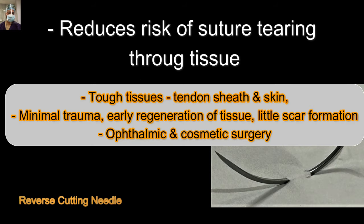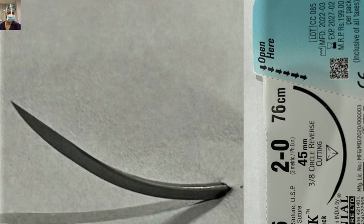This is a closer view of the needle, showing the triangular section of the cutting edge — and it is not the whole length of the needle. Only the last part, usually one-third of the needle length, has a cutting edge; the rest is a normal flattened surface. The cutting edge is towards the outer side — so for tough tissue like tendon, sheath, and skin. As you pass the needle through tissue, there is no cutting edge towards the wound margin, so there is less tearing. This 2-zero silk suture is a reverse triangle — the cutting edge is towards the outer side. The 45 mm written on the leaflet is the length of the needle shaft, and three-eighths is the circle part used.